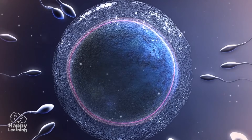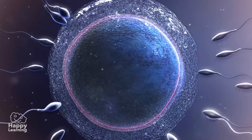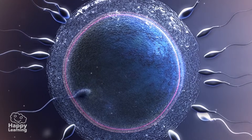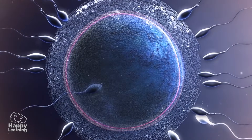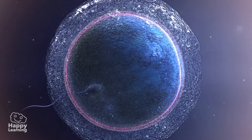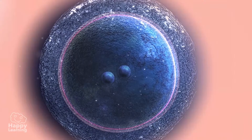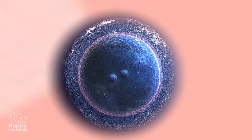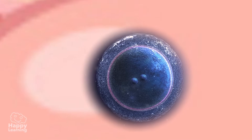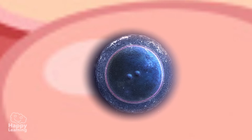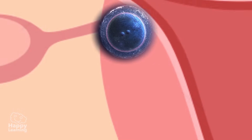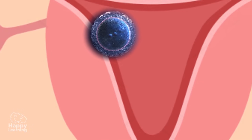Out of all the millions of sperm cells, only one will be able to penetrate and fertilize the ovum, creating a zygote. Gestation of the fetus can then occur within the female uterus.